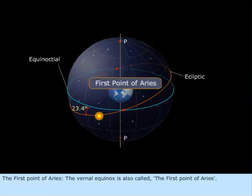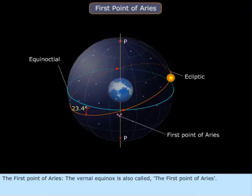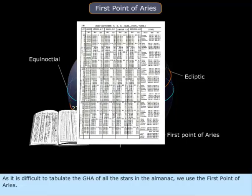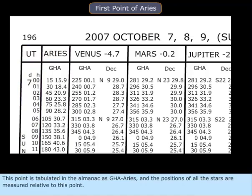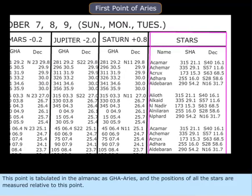The First Point of Aries. The vernal equinox is also called the first point of Aries. As it is difficult to tabulate the GHA of all the stars in the Almanac, we use the first point of Aries. This point is tabulated in the Almanac as GHA Aries, and the positions of all the stars are measured relative to this point.